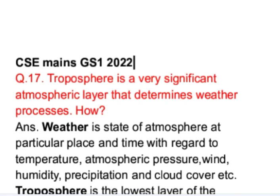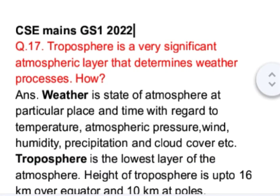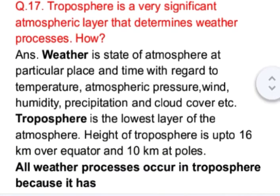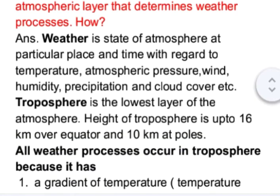Weather is the state of atmosphere at a particular place and time with regard to temperature, atmospheric pressure, wind, humidity, precipitation, and cloud cover. Troposphere is the lowest layer of the atmosphere. The height of the troposphere is up to 16 kilometers over the equator and 10 kilometers at the poles.